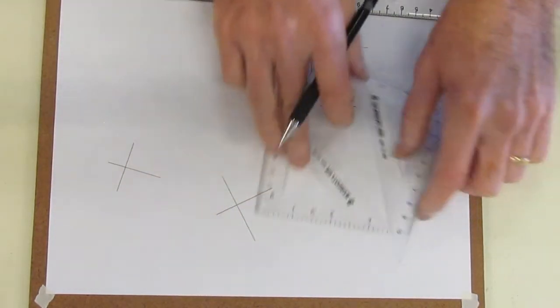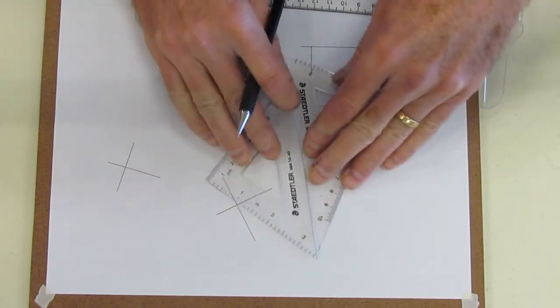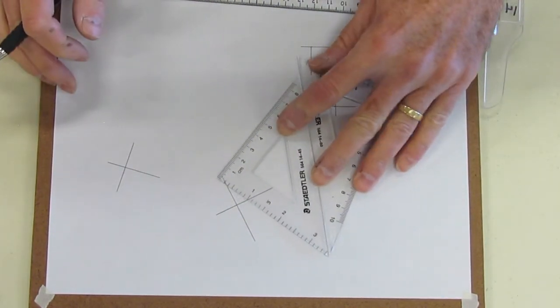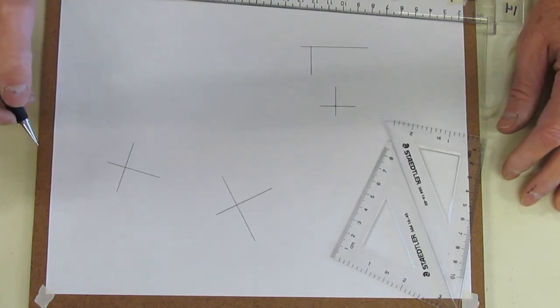So to do this, remember, hypotenuse to hypotenuse. Line up one side, slide the triangles until you get to the side that's not lined up. And that'll allow you to make perpendicular lines to a given line.